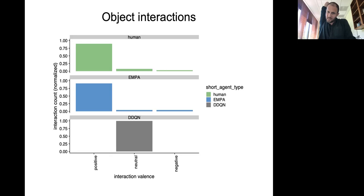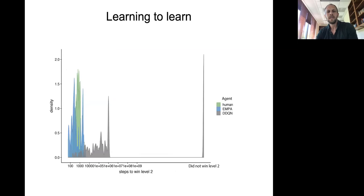Another informative thing we can look at are these object interactions. I've divided them here into positive, neutral, and negative interactions. The bird interaction in Frostbite would be an example of negative interaction. You can see that both EMPA and humans, almost all of their interactions are with positive objects, positively valenced objects, whereas DQN, it's not like it's interacting a lot with negative objects. It's just spending the vast majority of its time interacting with neutral objects, like just bumping into walls. So that's another kind of qualitative way in which these models are different. Another thing you can look at is a kind of learning-to-learn measure where we look at the number of steps it takes to win level two, conditional on having won level one. You can see that both humans and EMPA take very few steps to win the second level after having won the first level, whereas DQN, if it gets to level two at all, takes quite a lot longer to win level two. But even more tellingly, it often just doesn't get to level two at all.